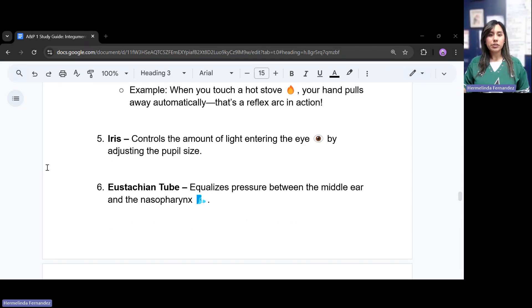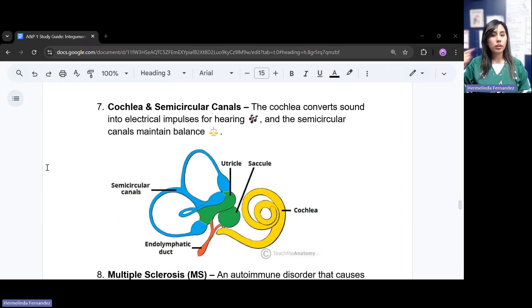And the iris. The iris controls the amount of light entering your eye by adjusting the pupil size. The eustachian tube equalizes the pressure between the middle of the ear and the nasopharynx. The cochlea and the semicircular canals. The cochlea, think of it, it kind of looks like a little snail. The cochlea converts sound into electrical impulses so we can hear, and the semicircular canals help us maintain our balance.